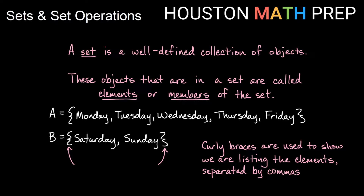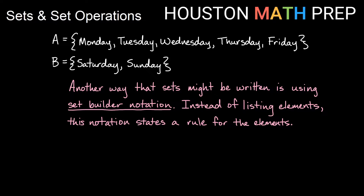You can tell that we're denoting a set, a list of things in mathematics. We use the curly braces to show here what we have as elements in our set, and our elements are separated by commas inside of the curly braces. Another way that we might represent these sets instead of writing them out one element at a time is we might use what's called set builder notation. So remember we said set A was going to be the weekdays and set B is going to be our weekend days.